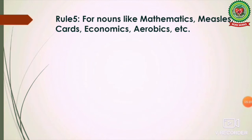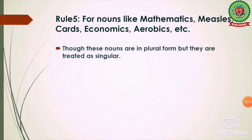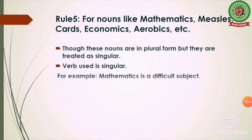The next rule: for nouns like mathematics, measles, cards, economics, aerobics, politics, etc. — even though these nouns are in plural form, they are treated as singular, and the verb used is also singular. For example: 'Mathematics is a difficult subject.' Even though 'mathematics' is in plural form, it is considered a singular subject, therefore 'is' is used, not 'are.'